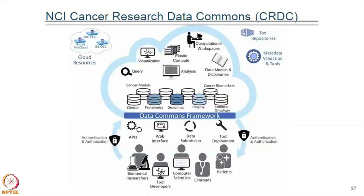Dr. Henry mentioned the precision medicine initiative that came to light in the last four years — Joe Biden's Cancer Moonshot initiative. As part of that, the National Cancer Institute is developing a Cancer Research Data Commons. It is a big theoretical ecosystem where all the repositories — genomics, proteomics, imaging, and so on — coexist together. Physically they are on different servers at different locations, but within the ecosystem they are together and the ecosystem provides analysis of all the information.